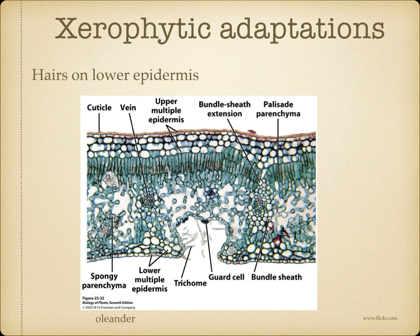Hairs on the lower epidermis — a thick layer of hairs on the leaves, especially on the lower epidermis, traps the moist air next to the leaf surface. The water potential gradient between the inside and the outside of the leaves is reduced, and therefore less water is lost by transpiration.